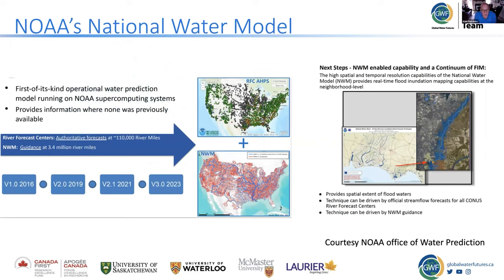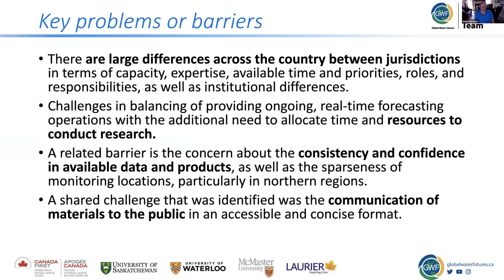Canada's national water model is really following the lead of the US, which developed a national water model in 2016. We heard a lot about where they're going with their next generation of models, and it's very consistent with the work we're doing in GWF. We're encouraged that GWF work will tie into the Canadian framework at the federal level, and we'll probably move into a North American context with water modeling.